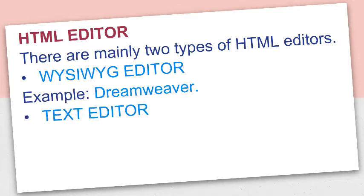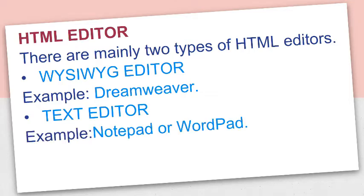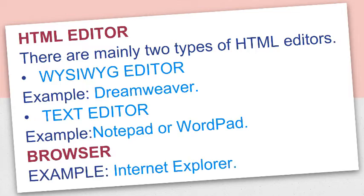The second type is a text editor. We can use text editors like Notepad or WordPad for creating HTML documents. A web browser is a software which is used to view web pages or websites. For example, Internet Explorer, Mozilla Firefox, Google Chrome, etc.